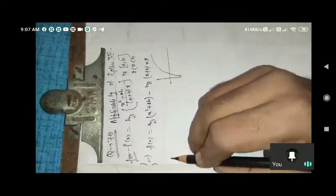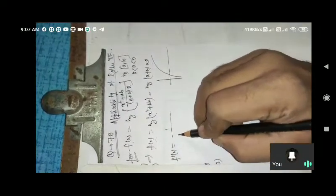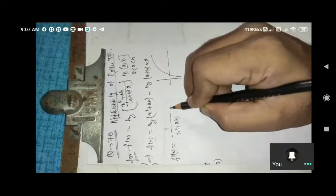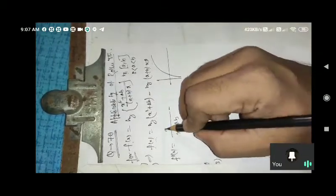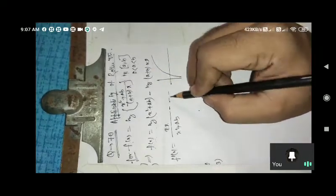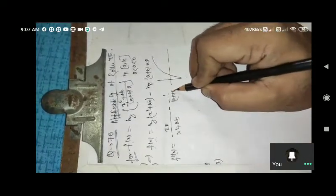So f'(x), by the conditions of Rolle's theorem, equals 1 by (x squared plus ab) times 2x minus 1 by (a plus b into x).